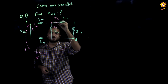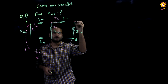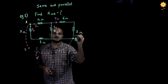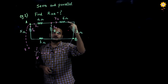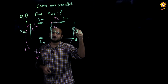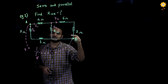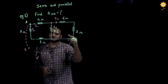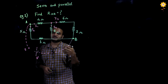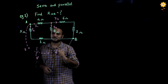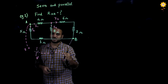Now, further when I see current I3 which is flowing in 6 ohm, the same current flows in 2 ohm. Now, if the current flowing in two resistances is the same, it gives me a hint that these two resistances are in series. This is just to get an idea of which resistances are in series or parallel.